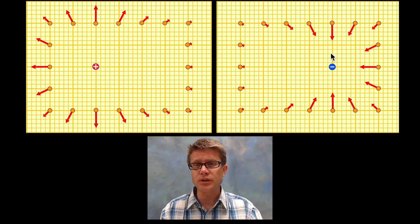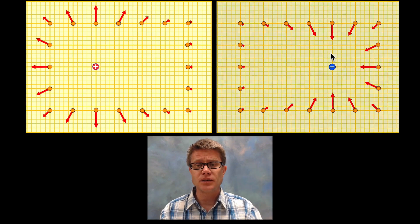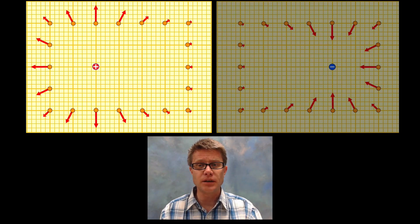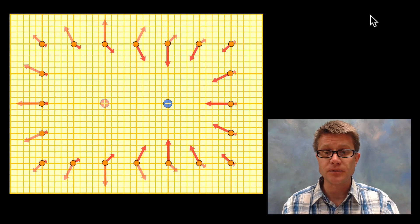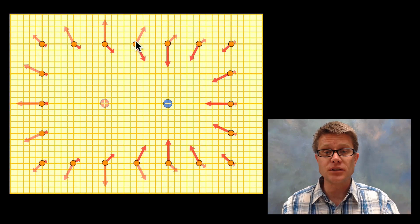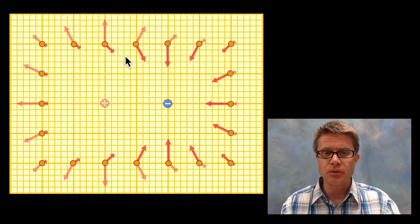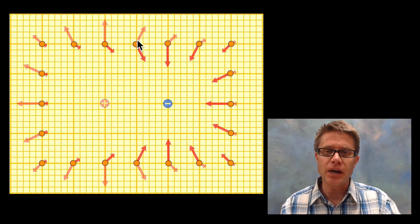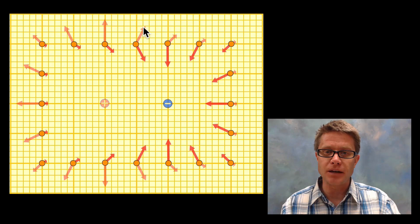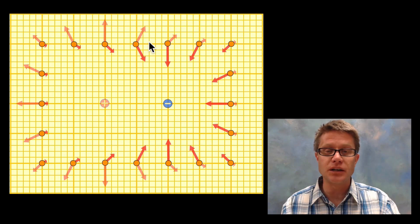But since we're dealing with dipoles, let's change the opacity of this one. Now let's just kind of overlap those two fields. So we could say let's do a vector addition right here. This positive is pushing on this in that direction. The negative is pulling on it in that direction. So if we add those two arrows up, I'm adding this one to that one, I should get a net electric field that's pointed in that direction.